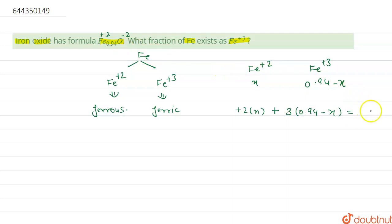And the overall charge on iron is plus 2, so it equals 2. So from here we can see that 2x plus 2.82 minus 3x equals 2. So from here it will become minus x plus 2.82 equals 2.